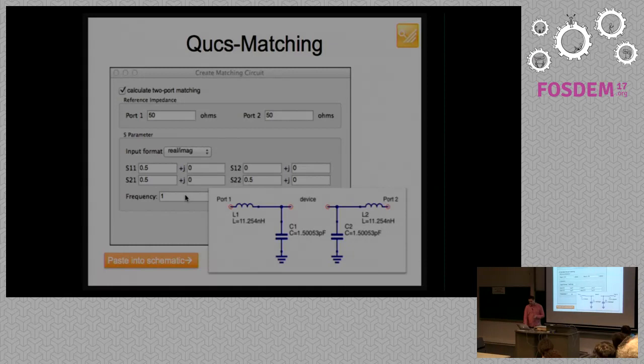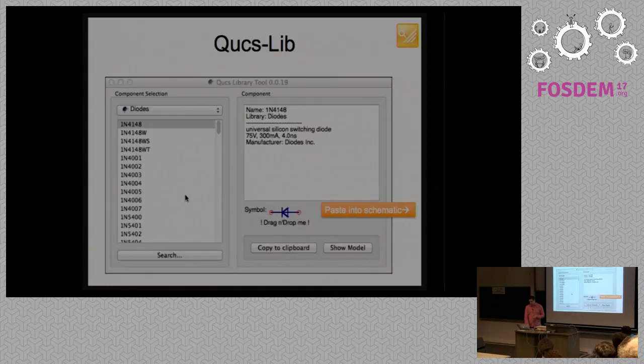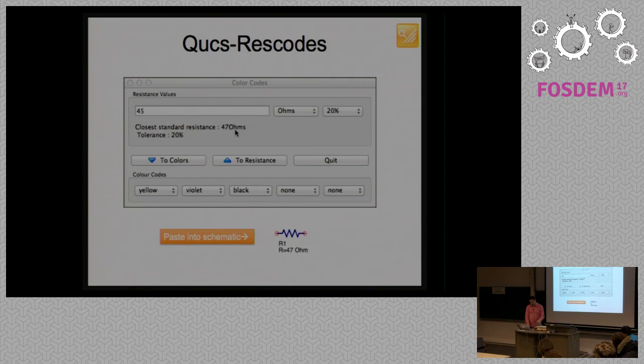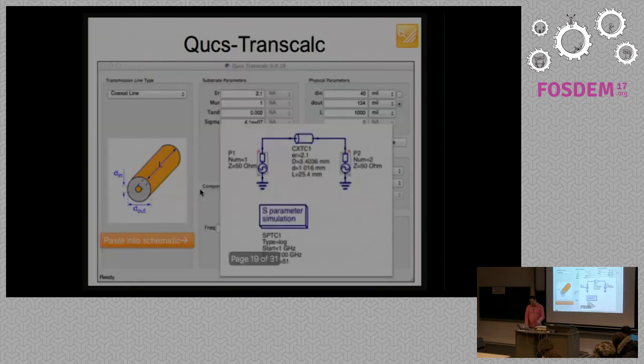Then, we have also these matching ports. Then, you have the library, where you can drag and drop the components from this dialog or from the dock that you have on the user interface. And this is the calculation from colors to value or value to colors.